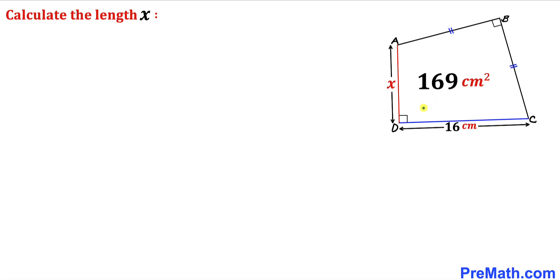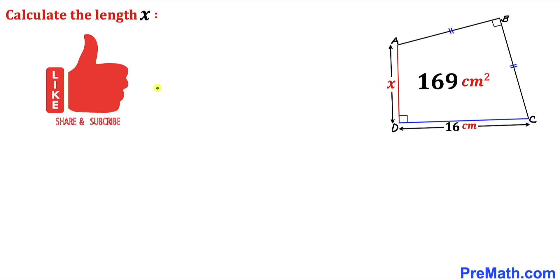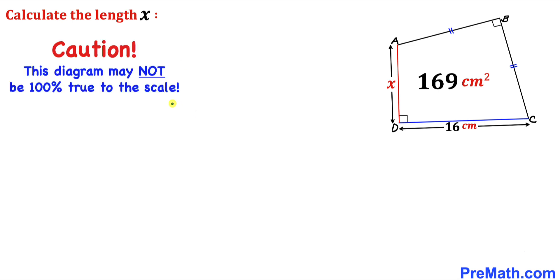Welcome to Pre-Math. In this video we have quadrilateral ABCD such that side length AB is equal to side length BC, and moreover these two opposite angles are each 90 degrees. We know that the area of this quadrilateral is 169 centimeter square, and side length CD is 16 centimeter. Now we are going to calculate this side length x.